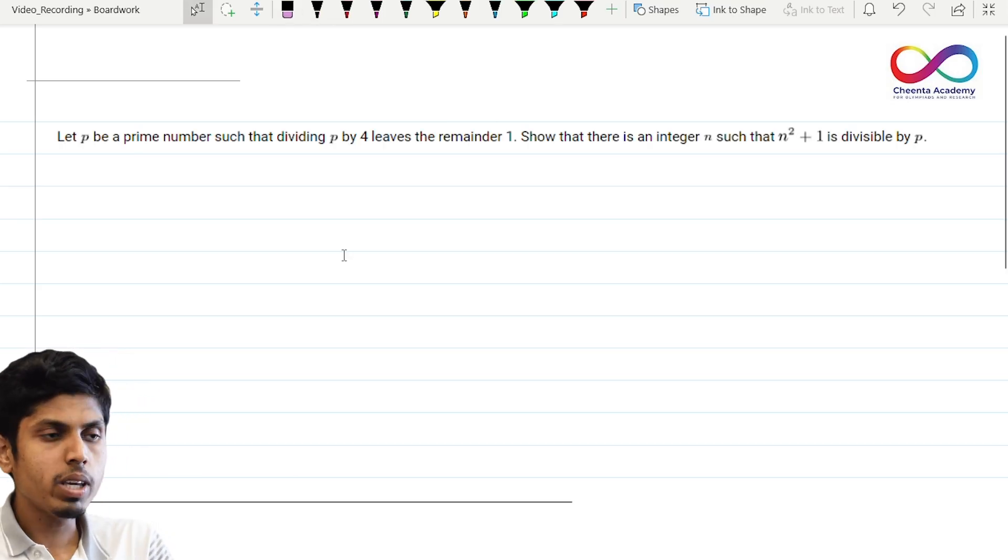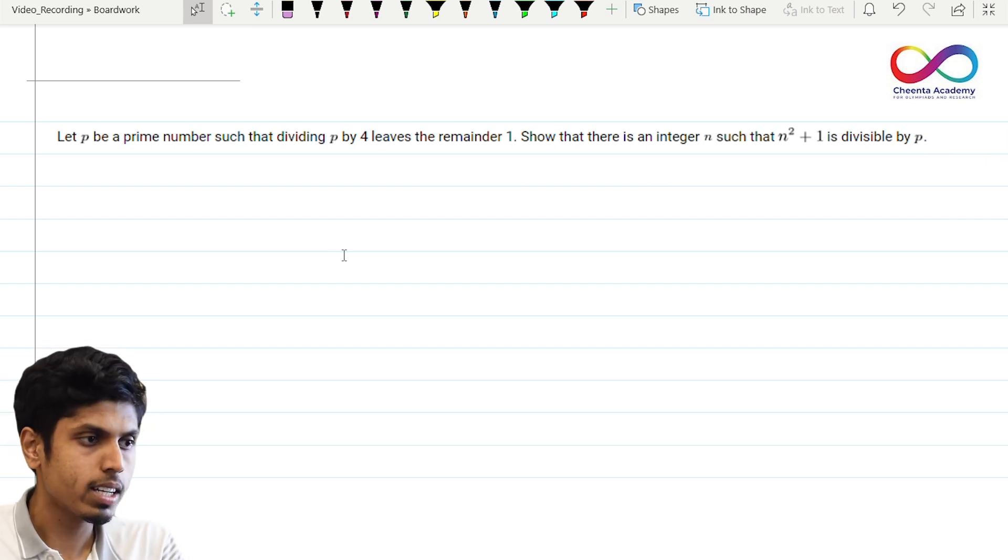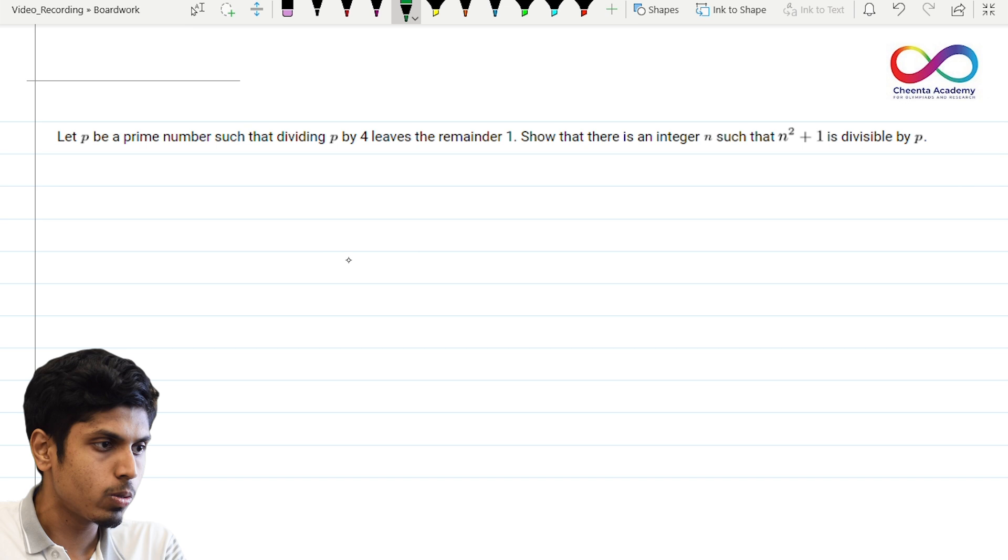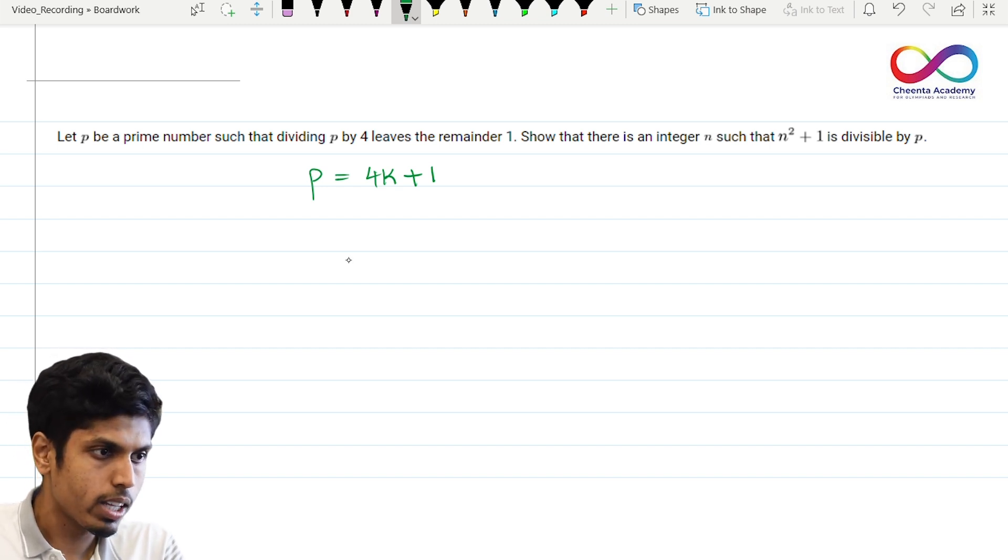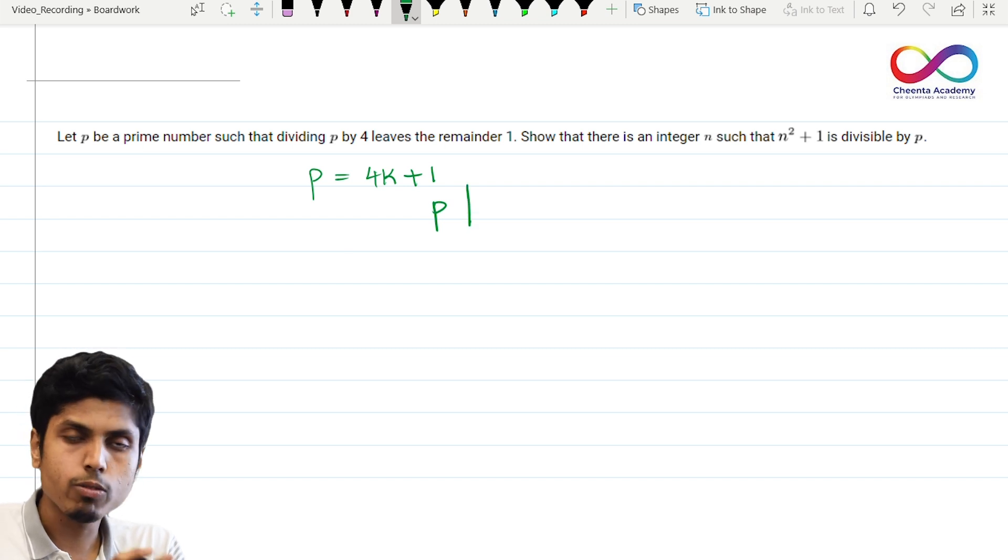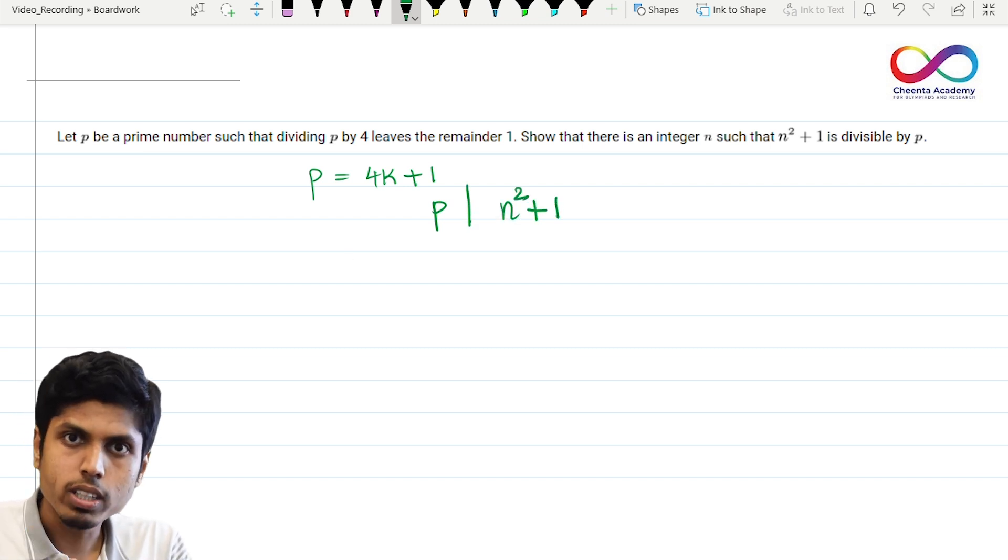Let us try to solve a problem. Let P be a prime number such that it leaves remainder 1 when divided by 4. So it's a prime of the form 4k plus 1. And we are supposed to prove that there exists an integer n such that P divides n squared plus 1. So symbolically, for every prime of the form 4k plus 1, we need to prove P divides some number squared plus 1. We need to prove such a number n exists.